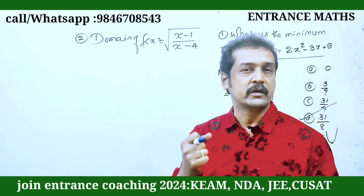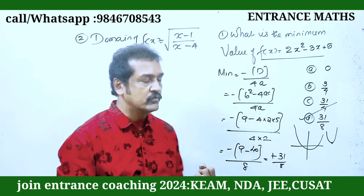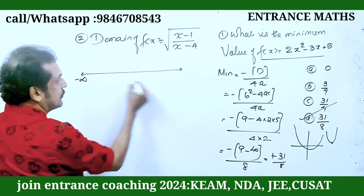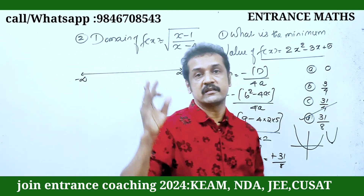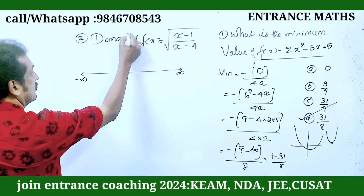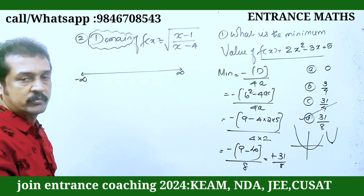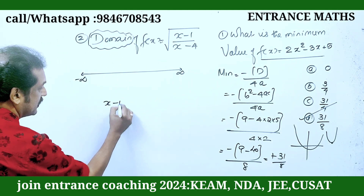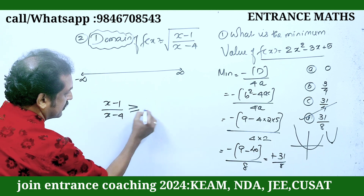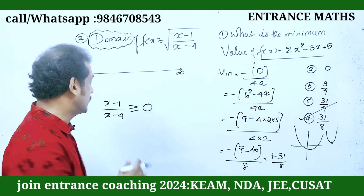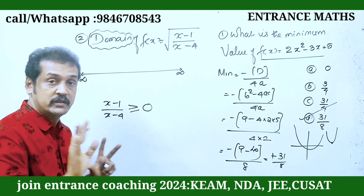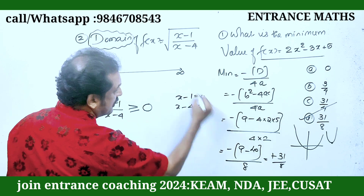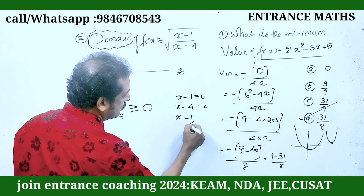For the domain, the expression under the root must be greater than or equal to zero. The number line goes from minus infinity to plus infinity. If we want to do x minus 1 equals 0, x equals 1, and x minus 4 equals 0, x equals 4. These two numbers are marked on the number line.